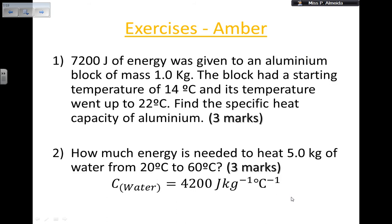Let's do a medium-level exercise. Question one: 7200 joules of energy has been given to an aluminium block of mass one kilogram. The block starts at 14°C and the temperature rises to 22°C. Find the specific heat capacity of aluminium. Question two: how much energy is needed to heat five kilograms of water from 20°C to 60°C? The specific heat capacity of water is 4200 J/kg·°C.